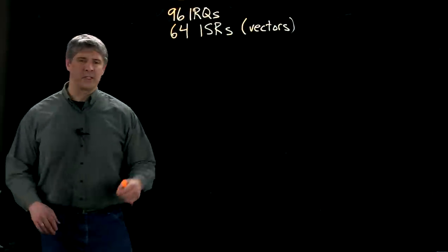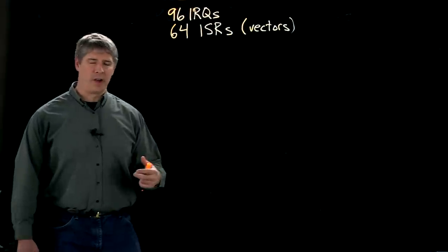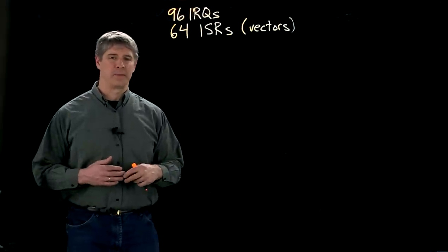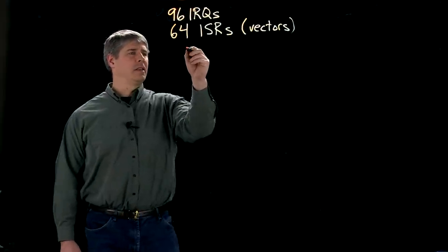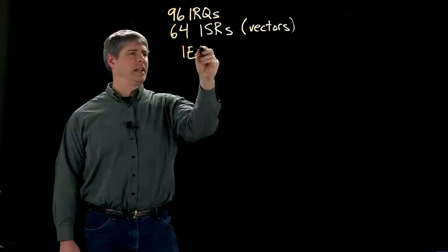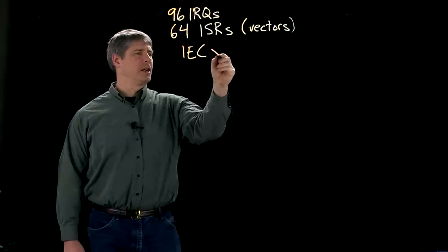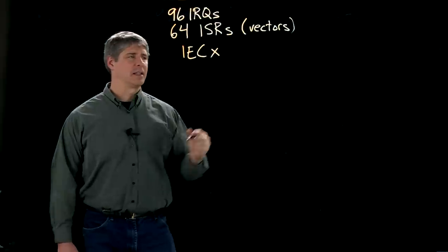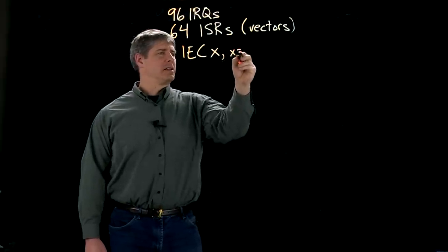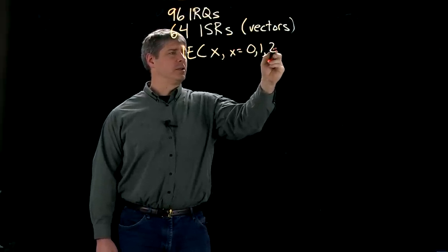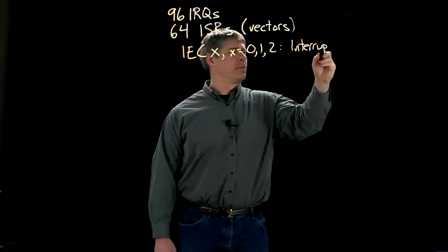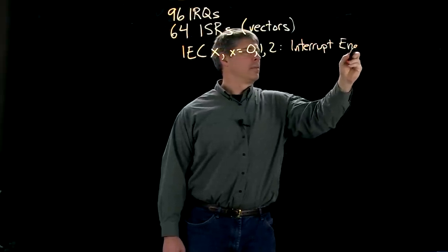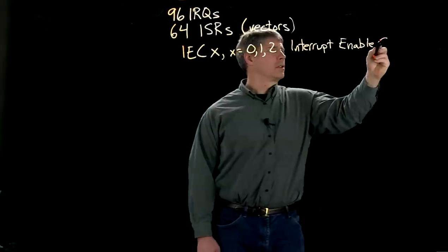Now associated with each interrupt, we have a number of special function registers that control their operation. And in particular, we have the interrupt enable control registers, which we write IEC X, where X is equal to zero, one, or two. And these are interrupt enable control.